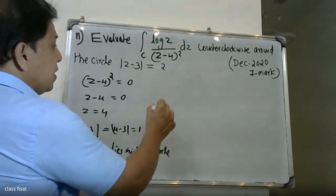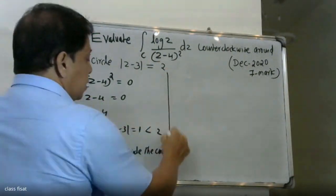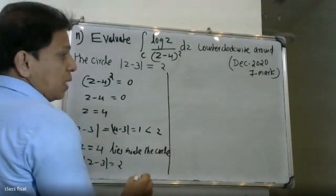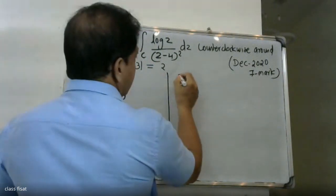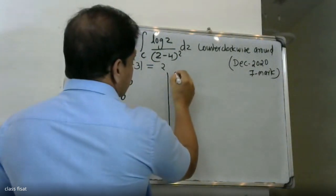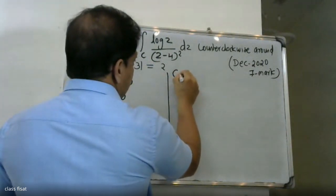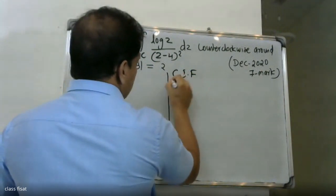Since the singularity lies inside the circle, we can apply Cauchy's Integral Formula.